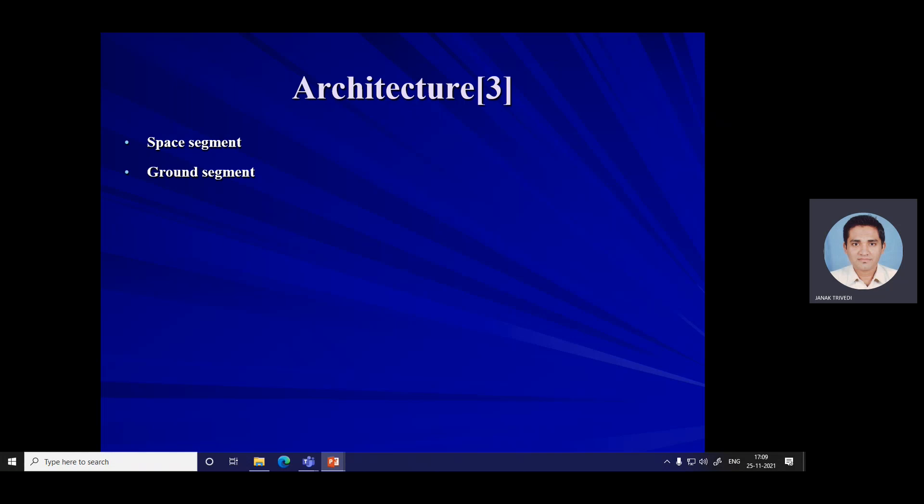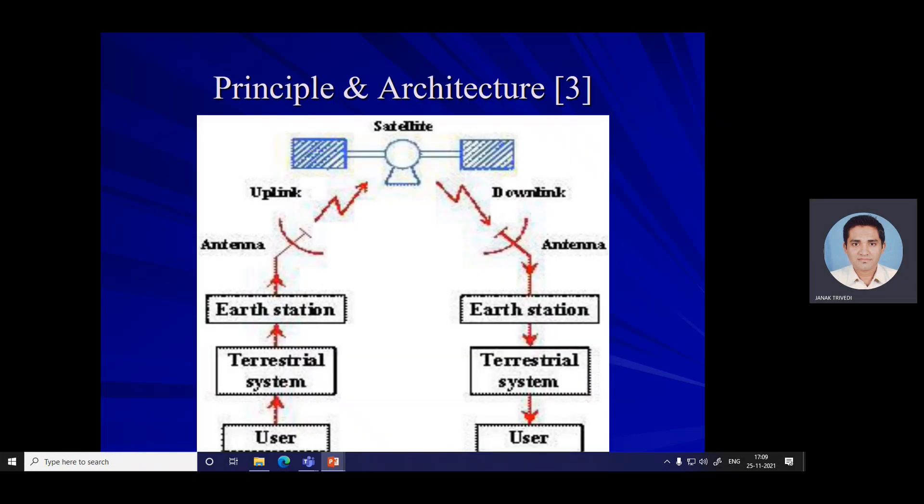The links between the spacecraft and the ground are usually separated from the user communication links. The ground segment of the communication satellite system consists of the Earth surface-based terminals that capitalize the communication capability of the space segment. The figure depicts general principles and architecture of satellite communication.